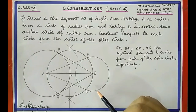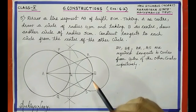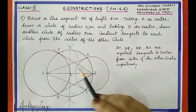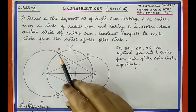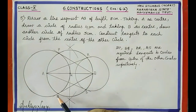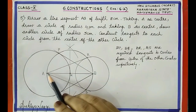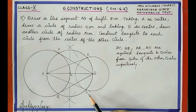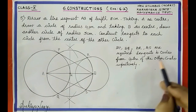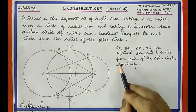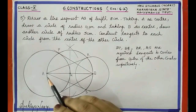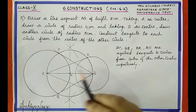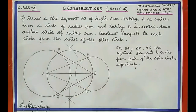So now we have constructed four tangents: BP, BQ, AR, and AS. These are the required tangents to the circles from the center of the other circle respectively.